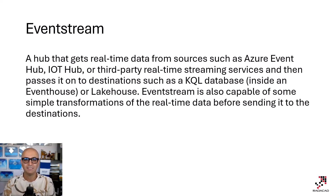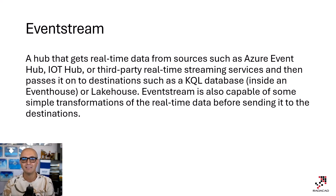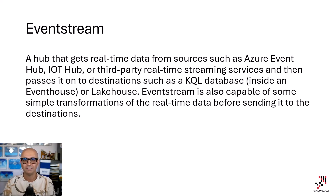Event Stream is a hub that gets data from multiple sources — such as Azure IoT Hub, Event Hub, Kafka, or any source that provides real-time streaming data — and passes it to a destination such as a KQL database (part of Event House) or Lakehouse. It can also perform transformations throughout the process like filtering the data, filtering columns, or grouping the data.